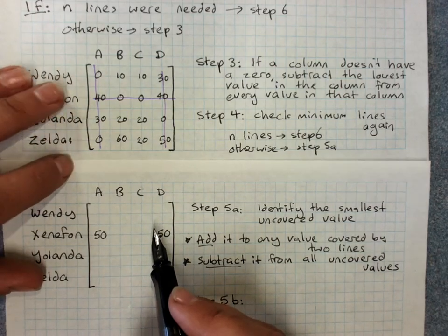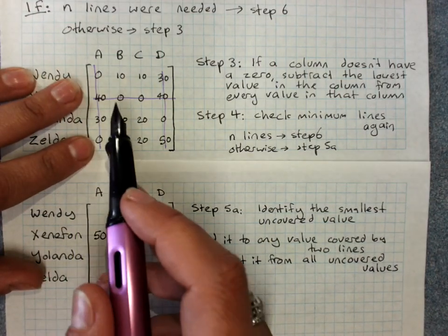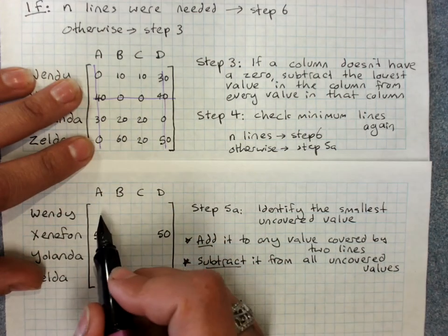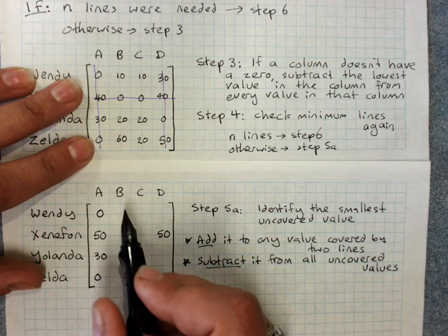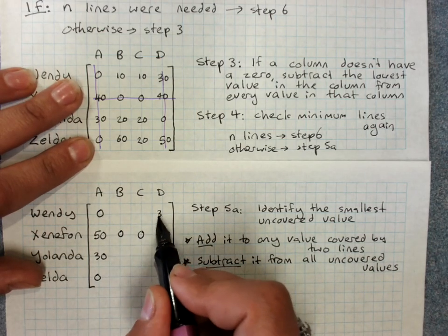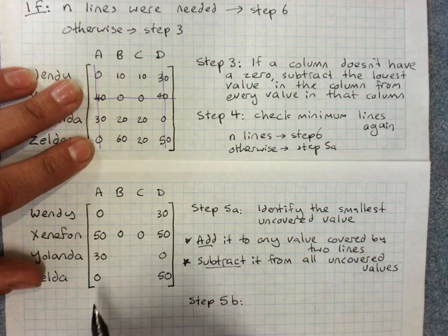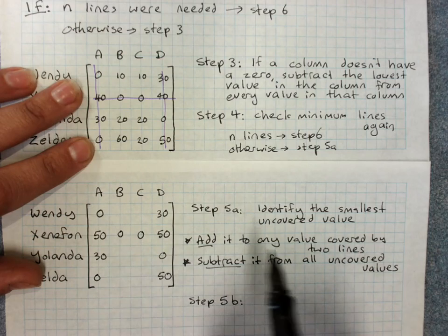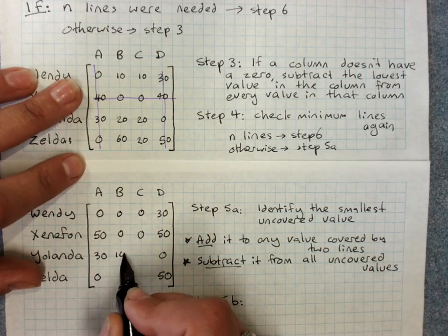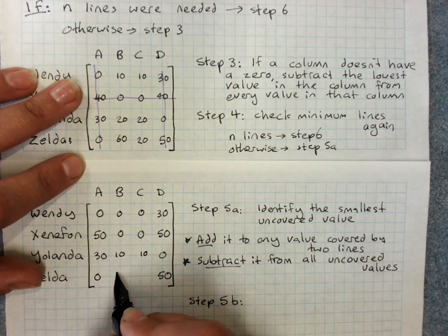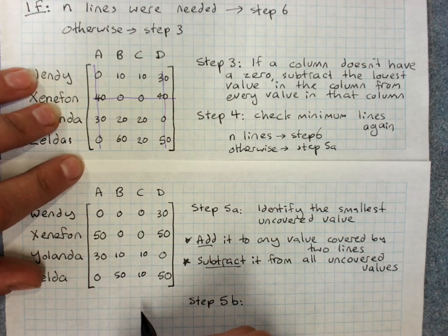Subtract that value from all uncovered values. So you might actually find it easier to write in all the other values. So all the ones that are just covered by one line stay the same. Because they were only covered by one line. And the uncovered values, I'm taking away ten from each one.